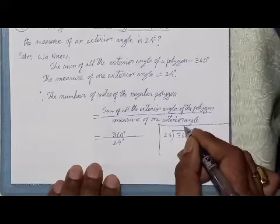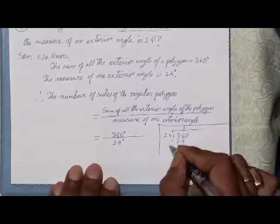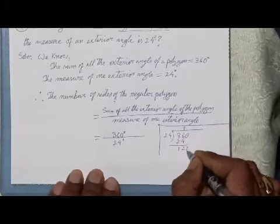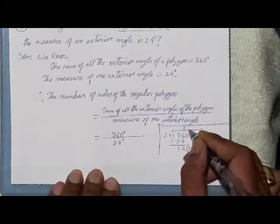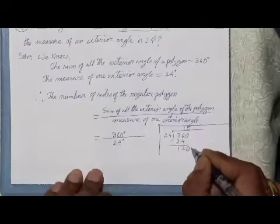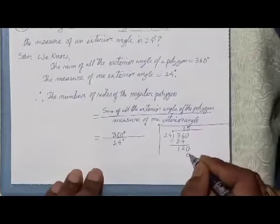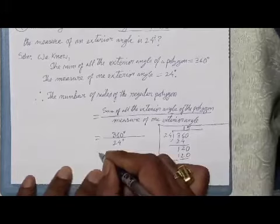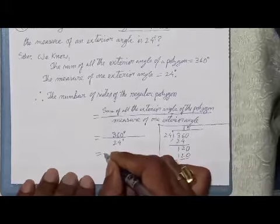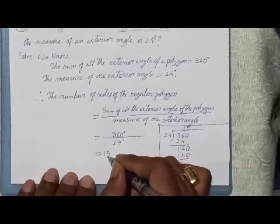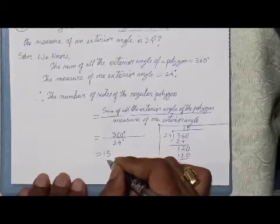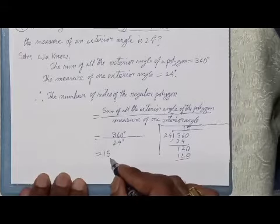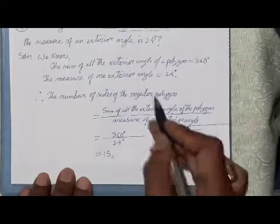Dividing 360 by 24, we get 15. So the required number of sides of the regular polygon is 15. I hope you can understand this.